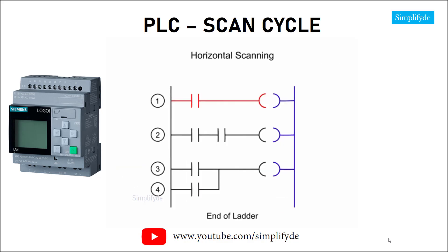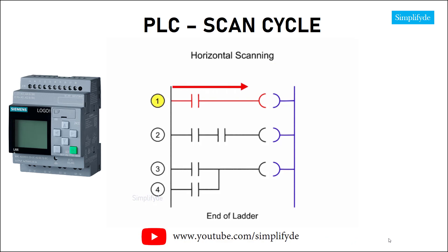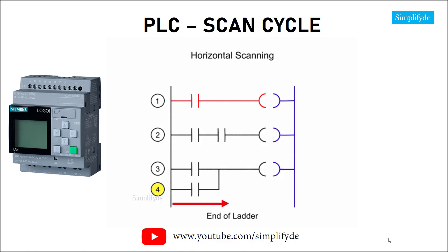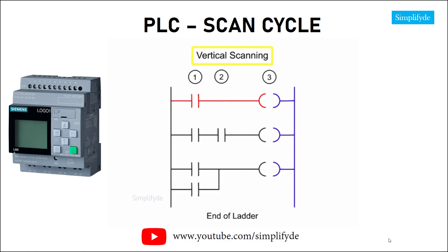The output status is updated with the light changing state from OFF to ON as defined in the ladder logic. The PLC scan follows a specific pattern to execute the program. The first pattern is referenced as horizontal scanning, where the program is examined from the first command, left to right across the rung, and top to bottom. Vertical scanning, on the other hand, examines the input and output instructions from the first command, vertically, column by column, and left to right.